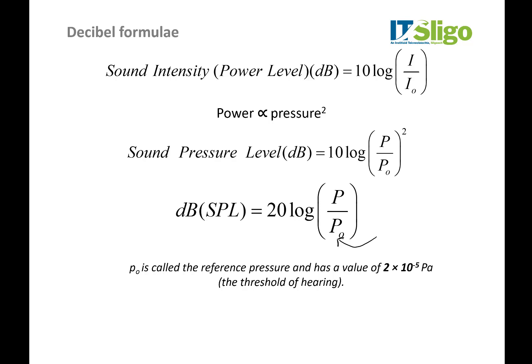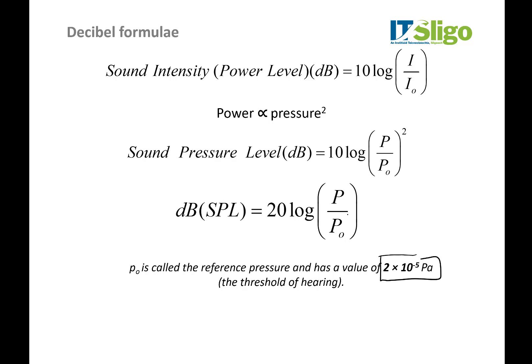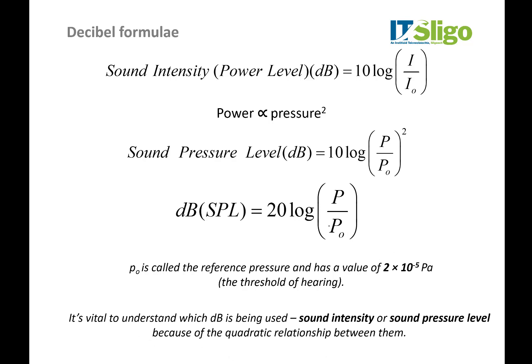The value P0 is the reference pressure — the quietest sound a human can hear. As mentioned earlier, this is 20 micropascals, written as 20 × 10⁻⁶, or 2 × 10⁻⁵. We're comparing the pressure of a noise, say a drill being used, to the quietest sound a human can hear. All log scales work on the basis of comparing a value to some base level — in pH we compare hydrogen ions to distilled water, and in the Richter scale we compare earth movement to the smallest detectable movement.